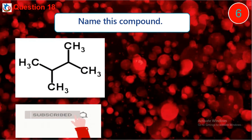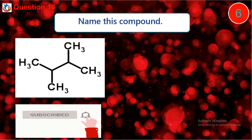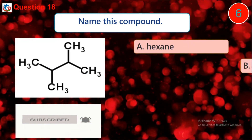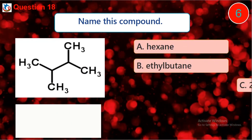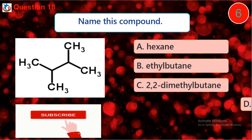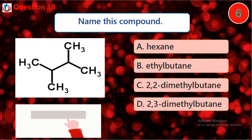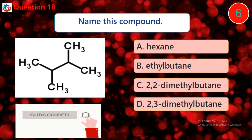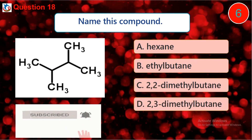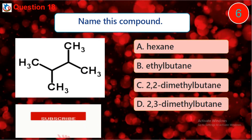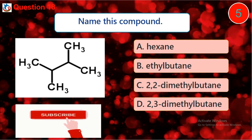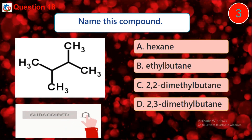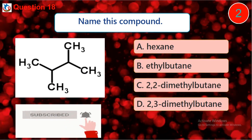Question 18. Name this compound. A. Hexane. B. 1-ethyl-butane. C. 2,2-dimethyl-pentane. D. 2,3-dimethyl-pentane.